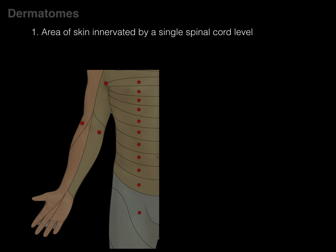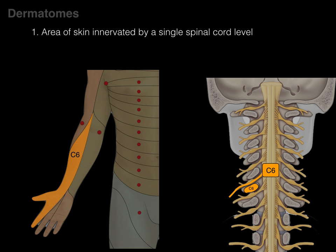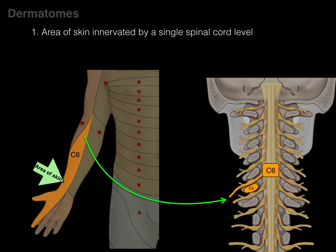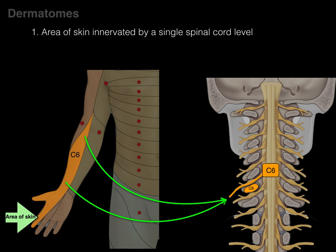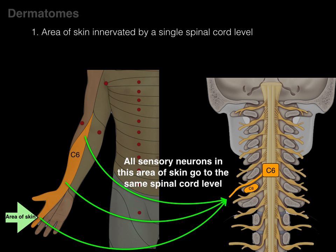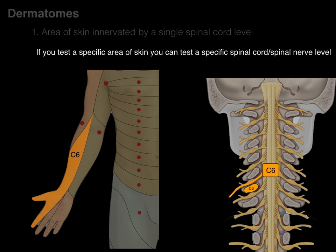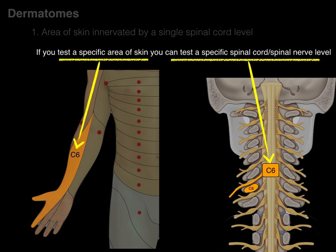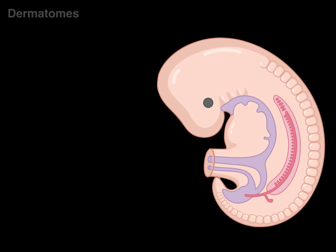There's some skin, and we're going to outline one dermatome — the C6 dermatome — and then its associated C6 spinal cord level. When we look at all the areas of skin in the C6 dermatome, all the sensory neurons in that area are going to the same spinal cord level. So if you test a specific area of skin, you can test a specific spinal cord and spinal nerve level, and vice versa.